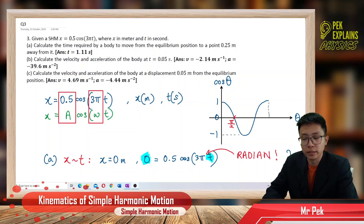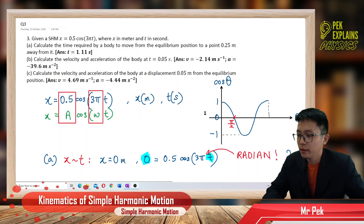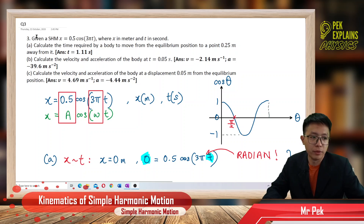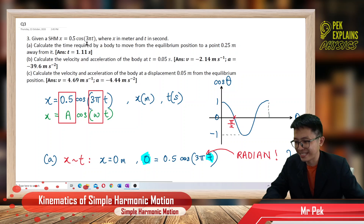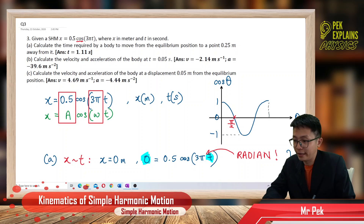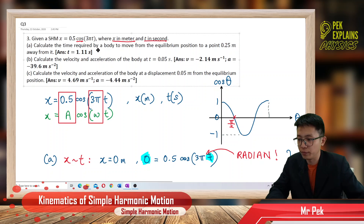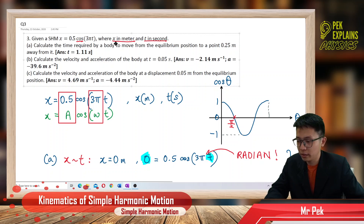Now let us start with the third question in kinematics of simple harmonic motion. Given a simple harmonic motion, x equal to 0.5 cosine — take note, this is a cosine equation — and the unit is x in meter, time in second. This is a cosine equation, and the unit of x is meter, time in second.